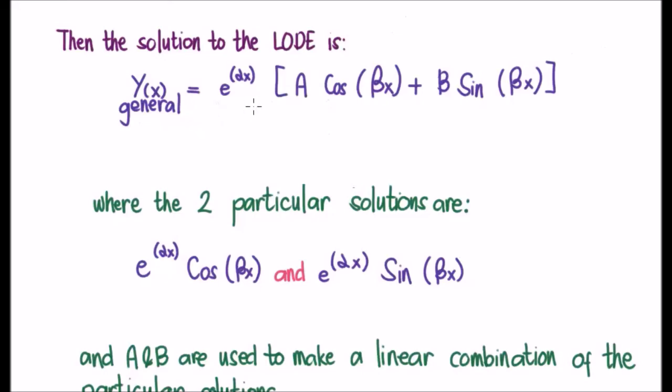So simple: e to the alpha x, and then we take a cos beta x plus b sine beta x, and that's the general solution when we have complex roots or b squared minus 4c is less than zero. So that's the general solution, and for the sake of argument, our two particular solutions are here, and then to take our linear combination where we multiply each by constant a and b in this case, and we add them.